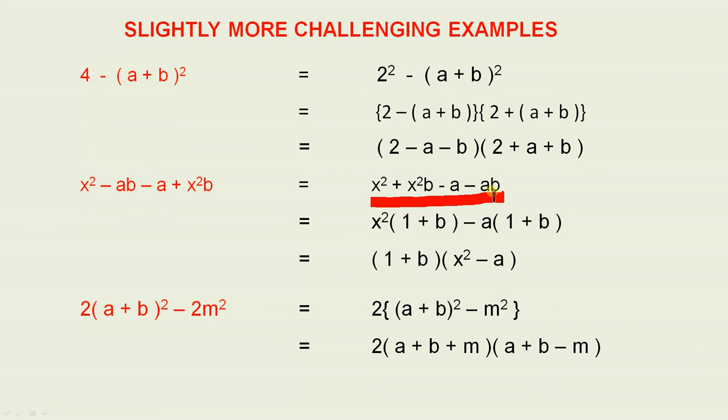For the last two terms here, if I take minus a outside of the brackets, I'm left with 1 plus b. Now 1 plus b occurs there, and 1 plus b occurs there. So we have (1 + b)(x² - a), and that's the answer.